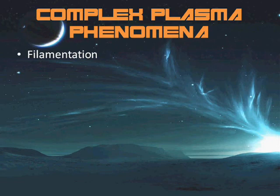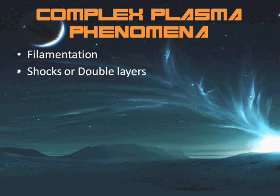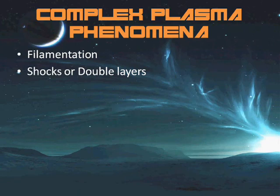The second phenomenon is shocks or double layers. Plasma properties change rapidly within a few Debye lengths across a two-dimensional sheet in the presence of a moving shock or a stationary double layer. Double layers involve localized charge separation which causes a large potential difference across the layer but does not generate an electric field outside the layer. Double layers separate adjacent plasma regions with different physical characteristics and are often found in current-carrying plasmas. They accelerate both ions and electrons.